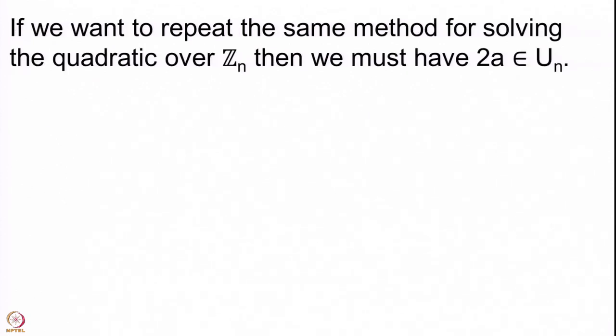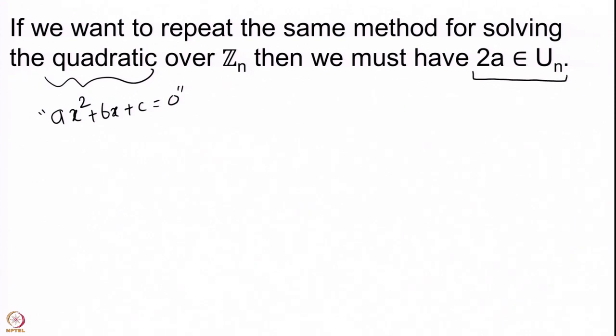If we want to use the same method for solving Ax² + Bx + C = 0 over Z_n, we must have that 2A is an invertible element modulo n — in the language of GCDs, this means gcd(2A, n) = 1. This forces n to be odd and further requires that A is coprime with n.